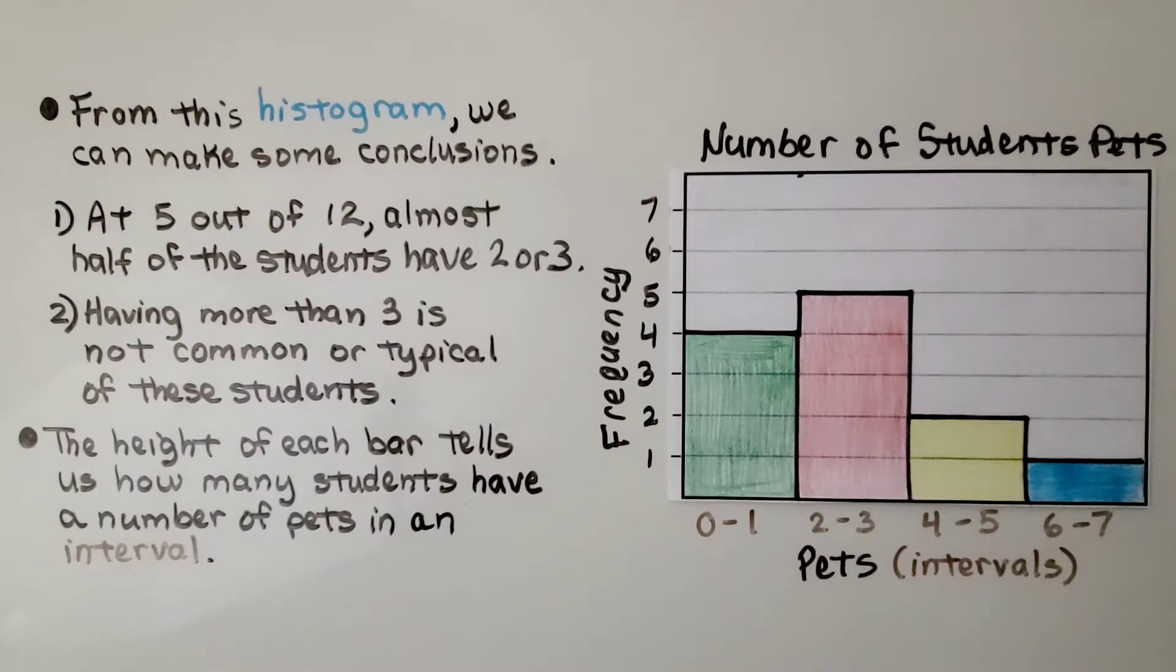From this histogram, we can make some conclusions. So this was the number of student pets. And this is 0 to 1 pet, 2 to 3 pets, 4 to 5 pets, 6 to 7 pets. And this is how many students fall into the category of these intervals. So 5 out of 12, that's almost half the students have 2 or 3.